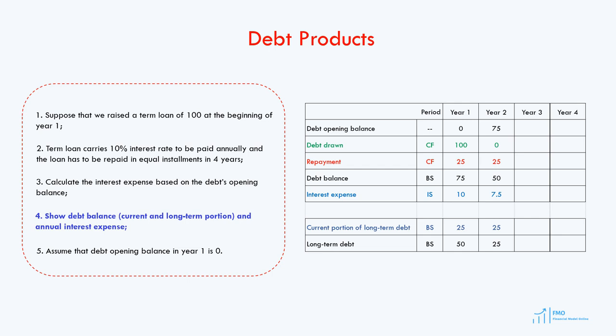In year 3, our debt opening balance is 50. We do not draw any debt, so debt drawn is 0. Debt repayment is 25, so the debt balance at the end of year 3 is 25 — the difference between the opening balance and the repayment. The interest expense is 50 times 10%, giving us 5, which goes to the income statement. The current portion of the long-term debt will be 25, because the remaining debt of 25 must be repaid within one year. Therefore, the long-term debt on the balance sheet will be 0.